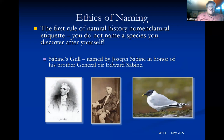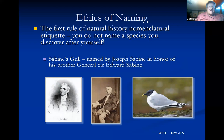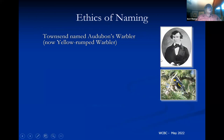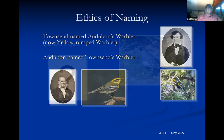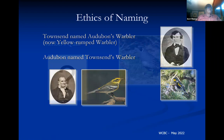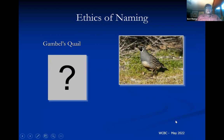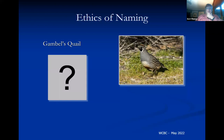The first rule of natural history nomenclature is you do not name a species you discovered after yourself — that's considered bad form. However, Joseph Sabin named a bird in honor of his brother, so it became Sabine's Gull. Townsend named Audubon's Warbler — now the Yellow-rumped Warbler — for Audubon, and Audubon named a warbler for Townsend in return. Gambel's Quail is interesting: William Gambel discovered it and, thinking someone had already named it for him, labeled it Gambel's Quail himself — and the name stuck.